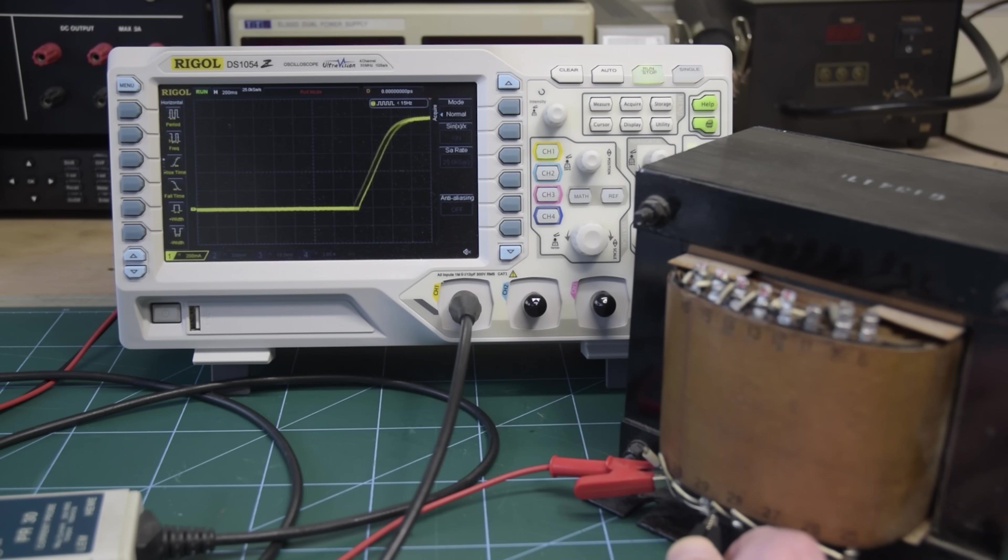So connecting an inductor across a voltage source lets us carefully decide how much energy we want to put in. We can either leave it connected for quite a while and fill it up completely with energy, or we can disconnect it part way through the ramp, like this, so that we can control how much energy we've put into the inductor. Really cool.